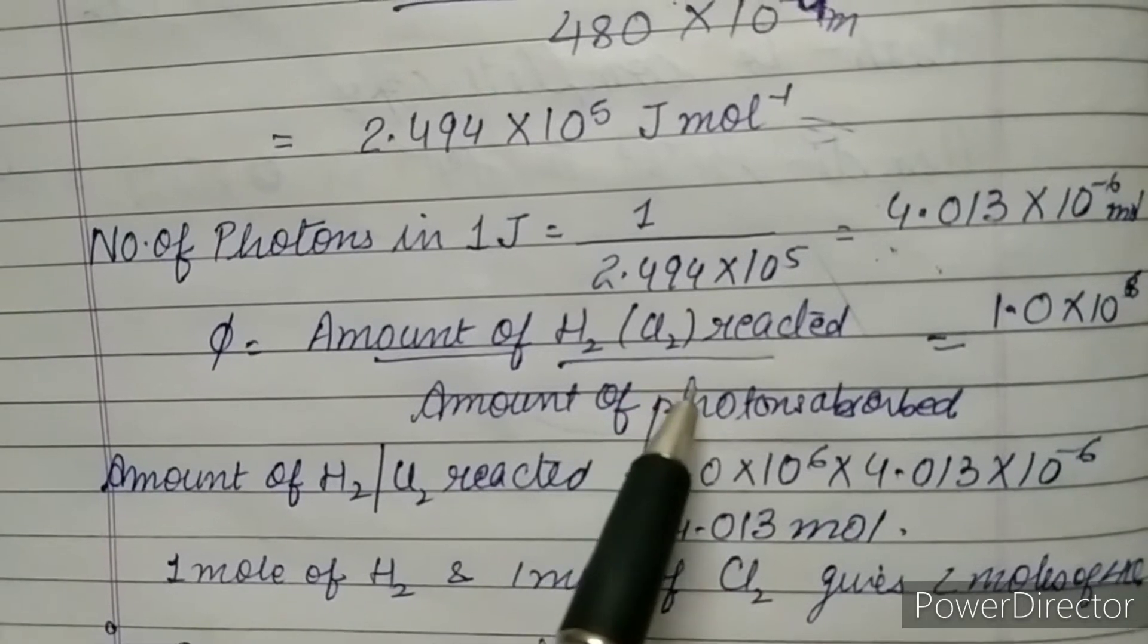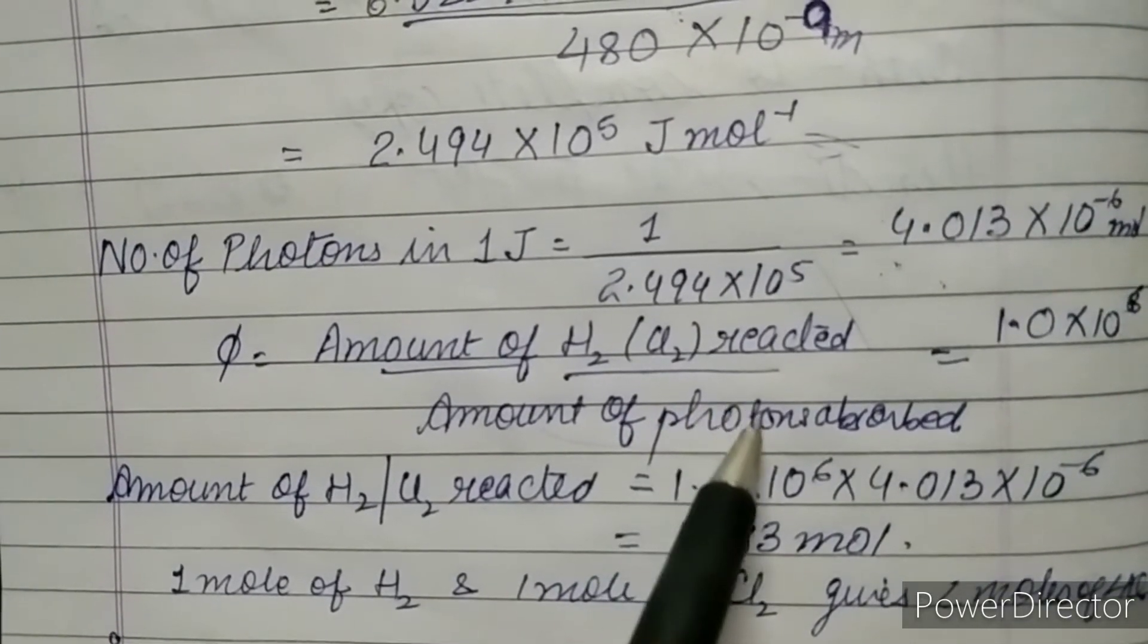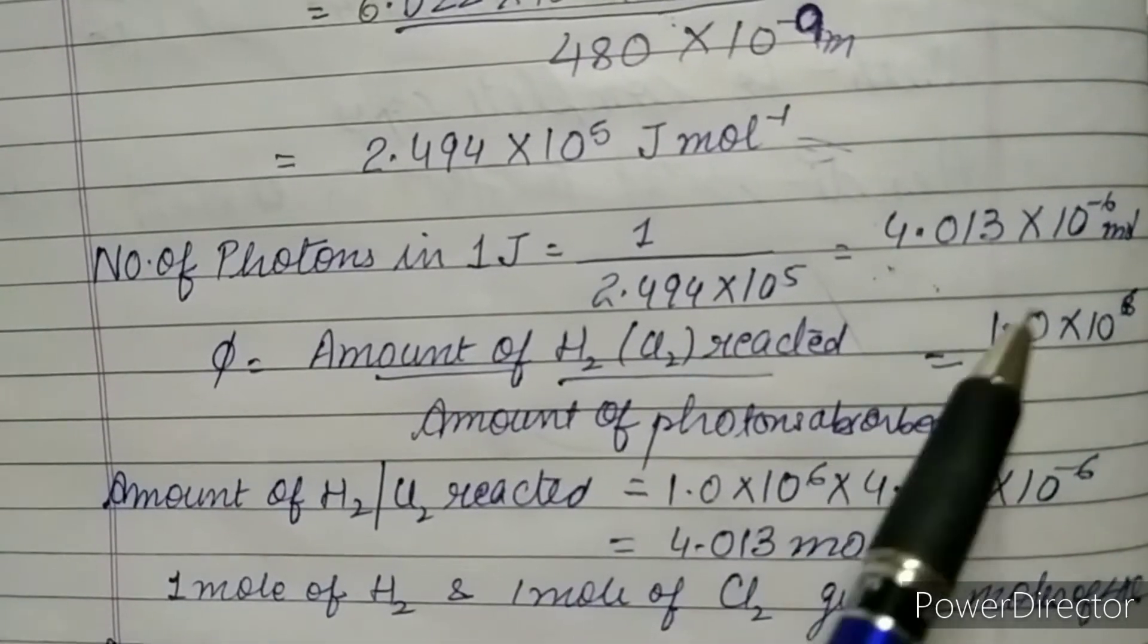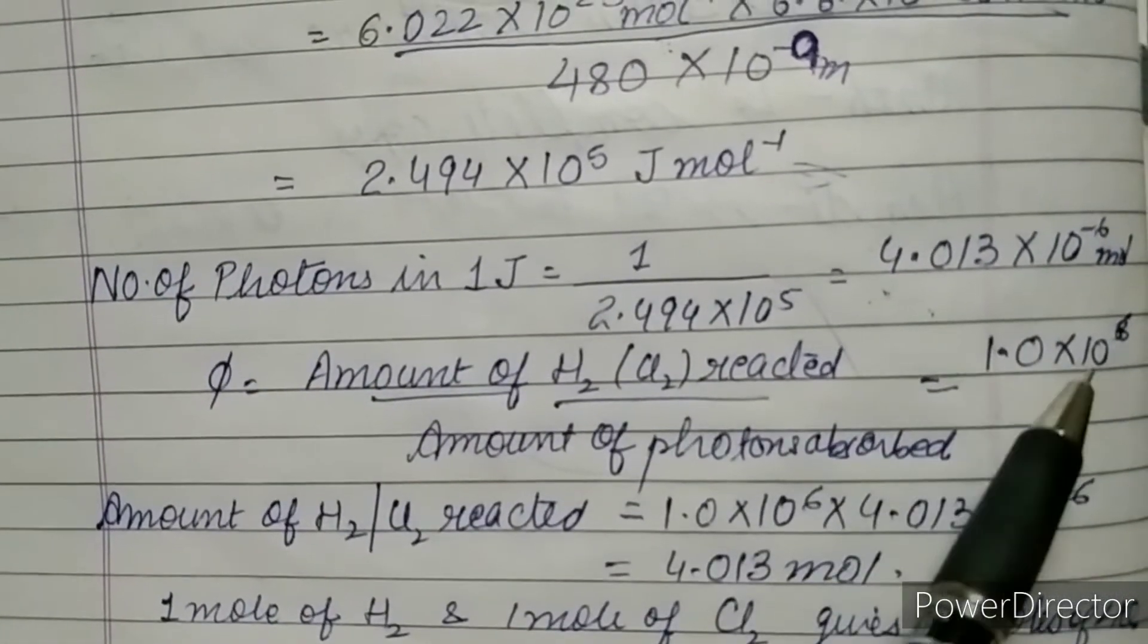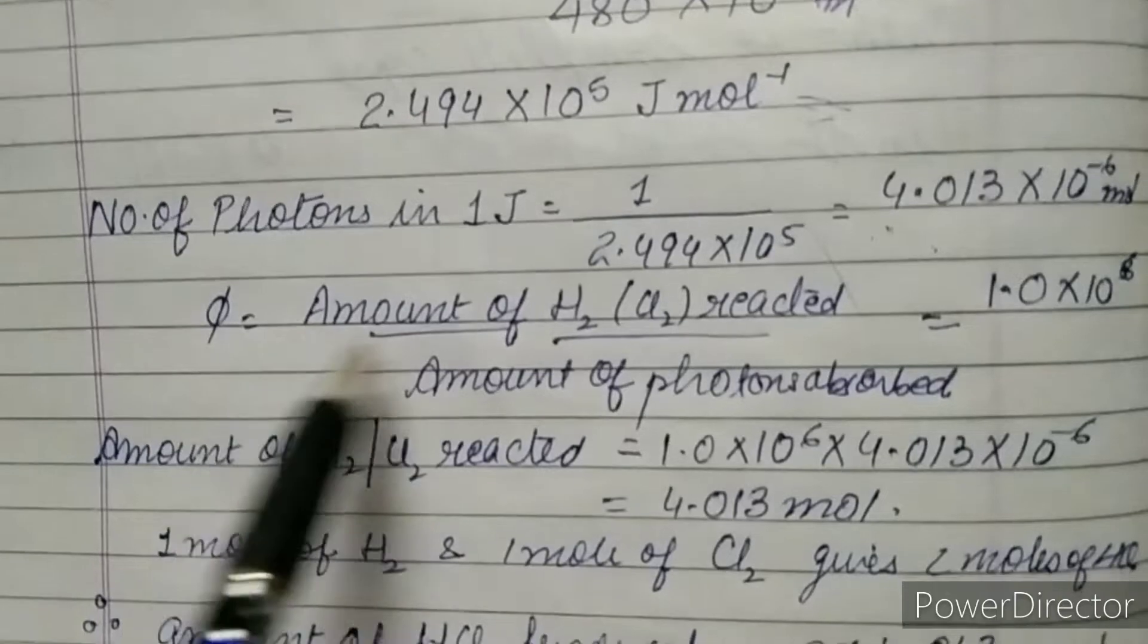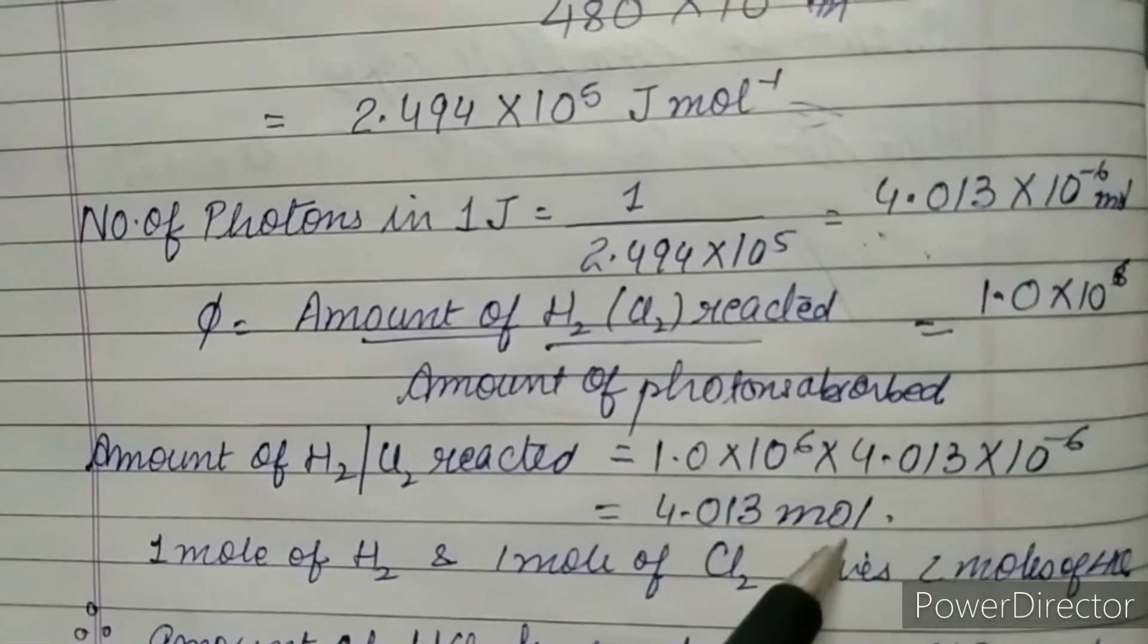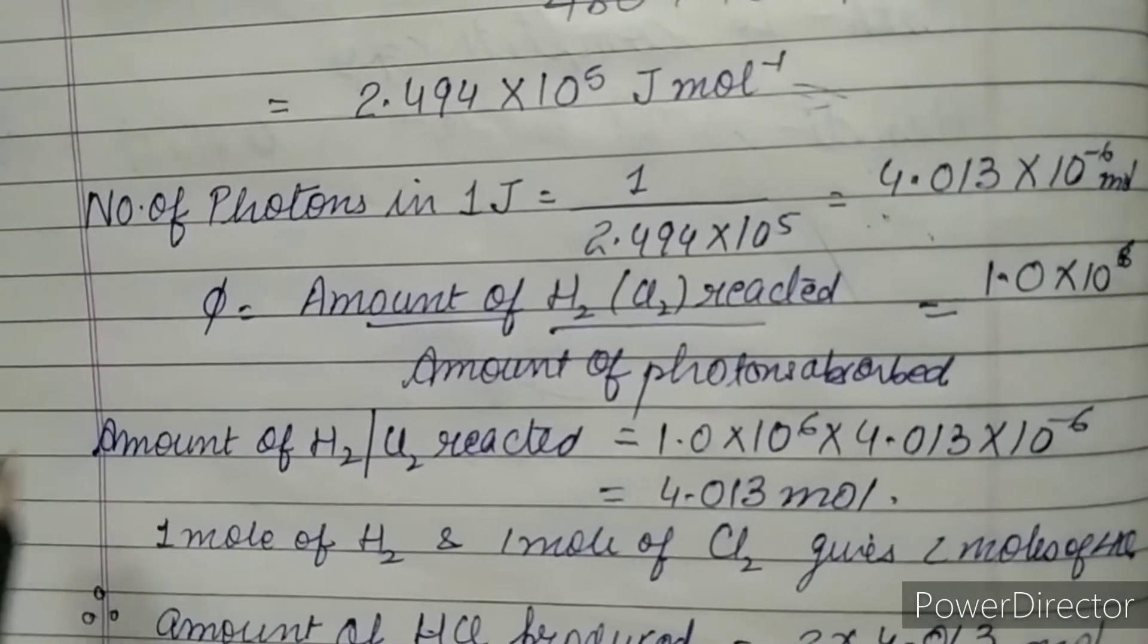This factor is in division on this side, so when you shift it to the other side you have to multiply it. So we are multiplying amount of photon absorbed with quantum yield, that is 1 × 10⁶, and we got amount of H₂ or Cl₂ reacted, that is 4.013 mole.